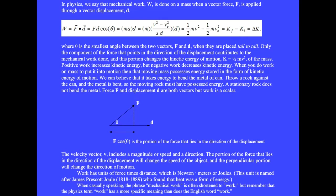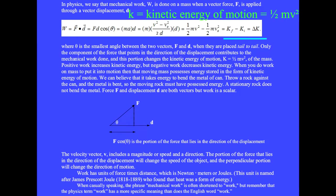Starting with the simplest case that cosine theta equals 1, and replacing force F with mass times acceleration ma. When the acceleration is constant, we can replace it with (v squared minus v₀ squared) over 2d. Canceling the d's gives one-half mv squared minus one-half mv₀ squared, which is the change in kinetic energy delta K equals Kf minus Ki, where the important quantity K is the kinetic energy one-half mv squared.